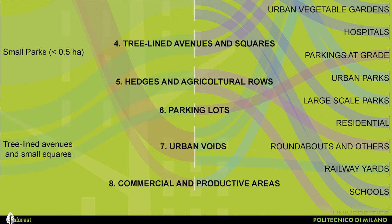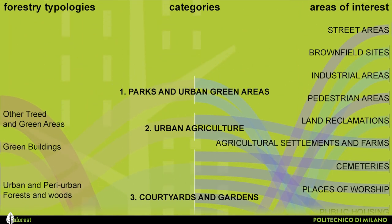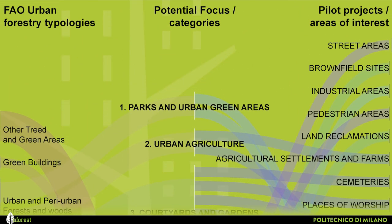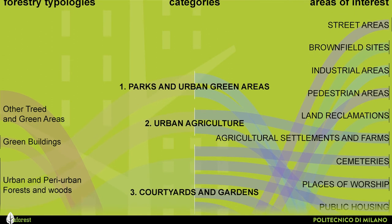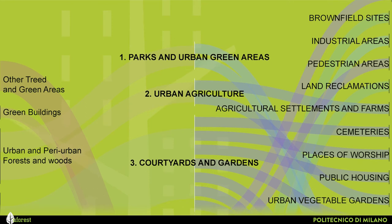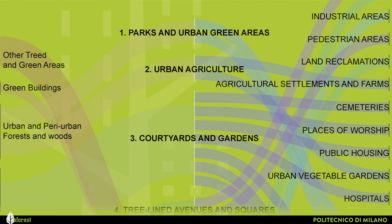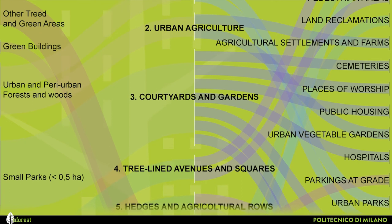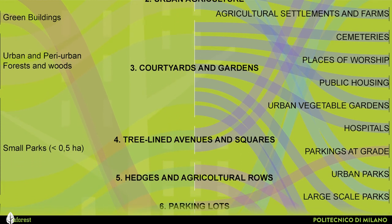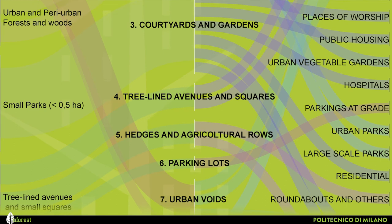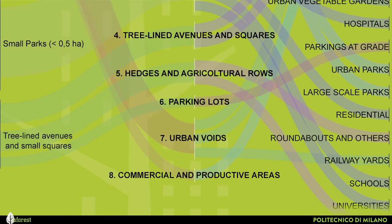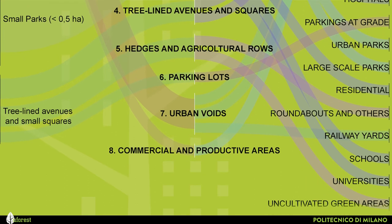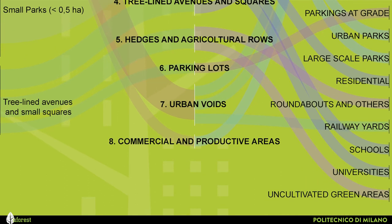More specifically, for each of these potential loci we tried to provide examples of areas of interest and spaces, such as streets, pedestrian paths, cycle paths, urban parks, large square parks, brownfield sites, industrial sites, land reclamation sites, agricultural settlements and farms, cemeteries, places of worship, public housing, urban vegetable gardens, restaurants, hospitals, parking lots, residential areas, roundabouts, railway yards, schools, universities, and all cultivated green areas.